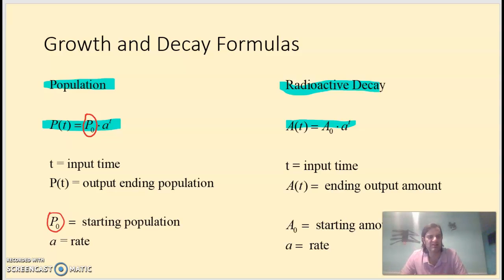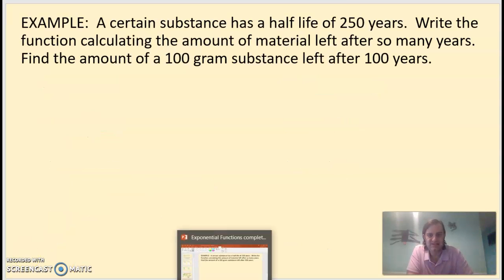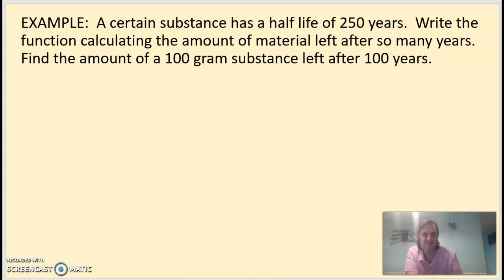Hey, it's Mr. Howard, and we've been working with writing and solving some exponential functions. We've used the growth and decay formulas for population, and we're getting ready to use one for radioactive decay. On to our next example. A certain substance has a half-life of 250 years. Write the function calculating the amount of material left after so many years, and then find the amount of a 100-gram substance left after 100 years. Let's write down our decay formula, which is A(t) equals A₀ times little a rate, raised to the t.